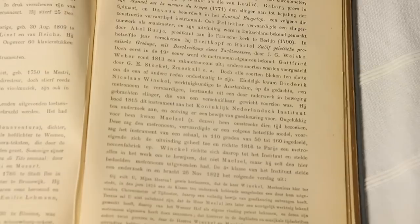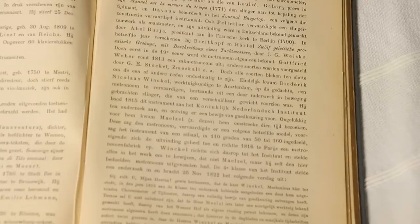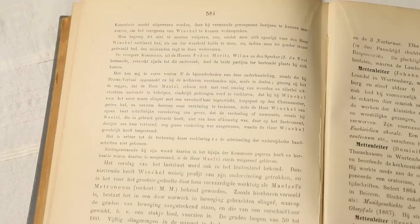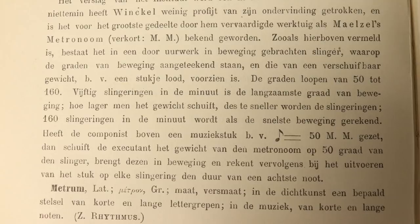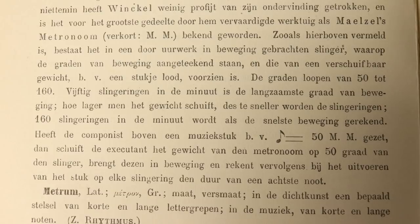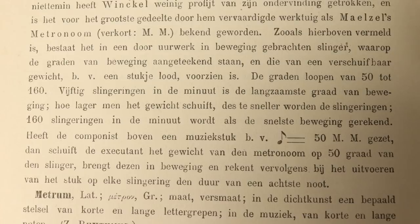Then he continues. Hef de componist boven de muziekstuk bijvoorbeeld 850 gezet, dan schuift de executant het gewicht van de metronome op 50 graad van de slinger, brengt deze in beweging en rekent vervolgens bij het uitvoeren van het stuk op elke slingering ten duur van een achtste noot. There is this beautiful old Dutch that could be translated like this. When a composer puts 8th note 50 above music, the performer moves the rod of the metronome on 50, set it into motion, and calculates for each vibration the duration of an 8th note.